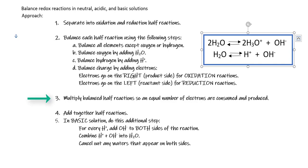Third, multiply the balanced half reactions so they have the same number of electrons consumed and produced — we want the same number of electrons coming from the oxidation half reaction going to the reduction half reaction. Then add the two equations and cancel out as needed. If the solution is basic, add hydroxide to neutralize the hydrogen ions on both sides of the equation, then combine H⁺ and OH⁻ to form additional water.